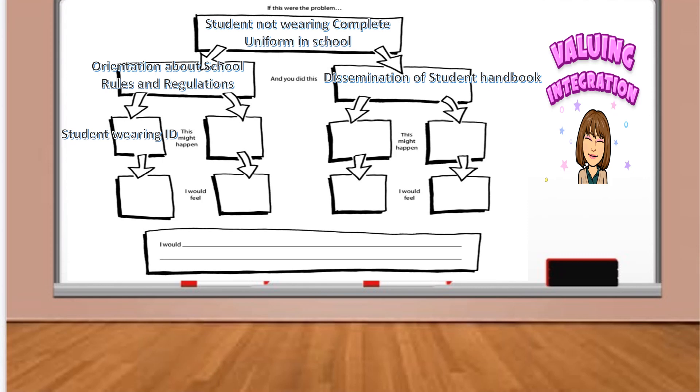Example: Student not wearing complete uniform in school. From the left side, orientation about school rules and regulations. And this might happen, student wearing ID. From the right side, what you did, dissemination of student handbook. And you will think what might happen if the student have already their student handbook.